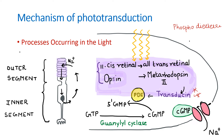With cGMP converted to 5-GMP, there is no cGMP available to keep the sodium channel open. So the cGMP-gated sodium channel is now inhibited. When this sodium channel is inhibited, the cycling of sodium no longer occurs and the cell moves into a hyperpolarized state. Earlier it was depolarized, but because sodium is no longer entering, the cell is hyperpolarized, and there will be no release of neurotransmitters.